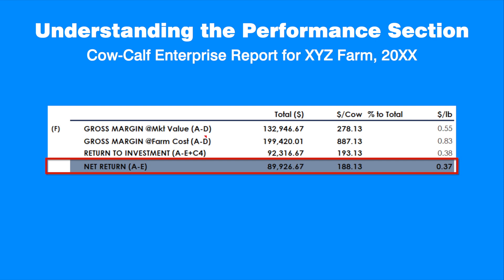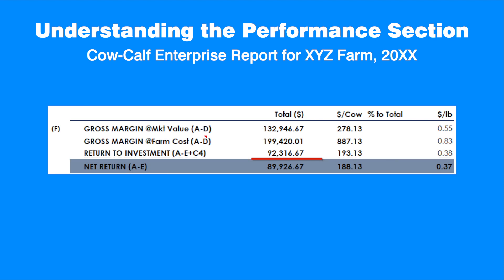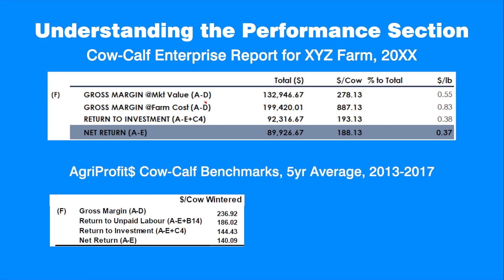The net return for this cow-calf enterprise is $188.13 per cow, or 37 cents per pound weaned. This is the profit after all costs — variable, fixed, and capital — are paid. Looking at the AgriProfit's cow-calf benchmarks, this producer outperforms the provincial average by 17.4% and 34.3% for gross margin and net return respectively. Additional revenue of $55.41 per cow and greater cost of $7.37 per cow resulted in the higher margin of $48.04 per cow.